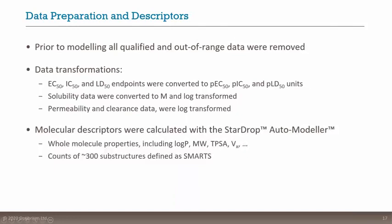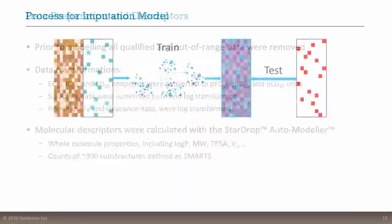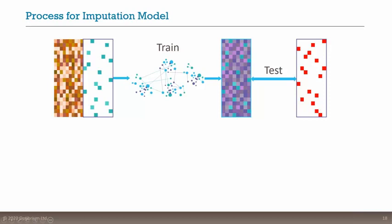Before the data was applied to Alchemite, we did some pre-processing: we removed qualified and out-of-range data, and carried out standard transformations. EC50, IC50, and LD50 endpoints were p-transformed, and solubility, permeability, and clearances were log-transformed. This makes the data more uniformly distributed, which makes it easier for the machine learning to understand.